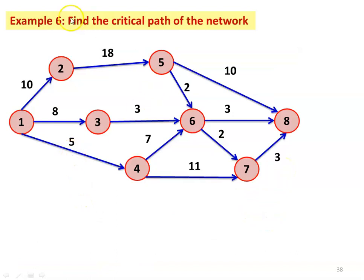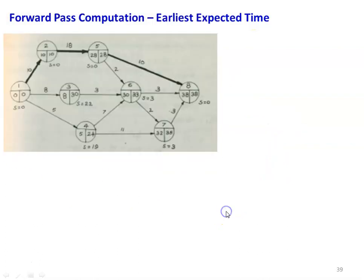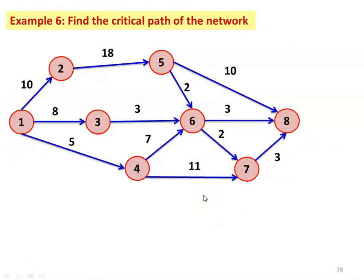Then we take another example. We are given a network with the relationship between various events. The activities are: 1 to 2 with 10 days, 1 to 3 with 8 days, 2 to 5 with 18 days, 3 to 6 with 3 days, 4 to 6 with 7 days, 5 to 6 with 2 days, 5 to 10 with 10 days, 6 to 8 with 3 days, 6 to 7 with 2 days, 7 to 8 with 3 days, and 4 to 7 with 11 days. We have to find the critical path of the network.